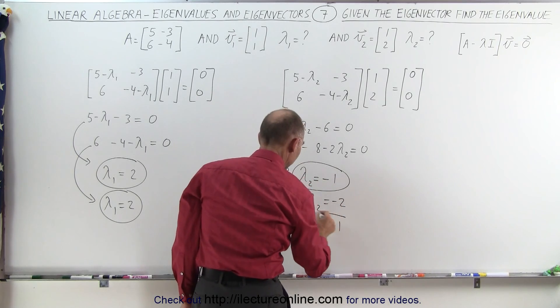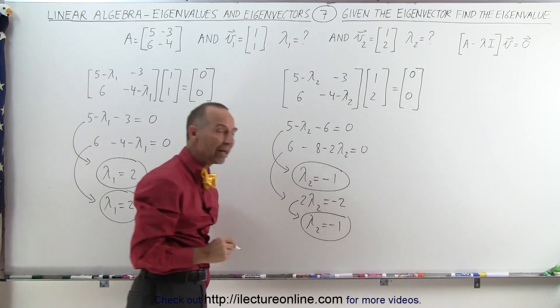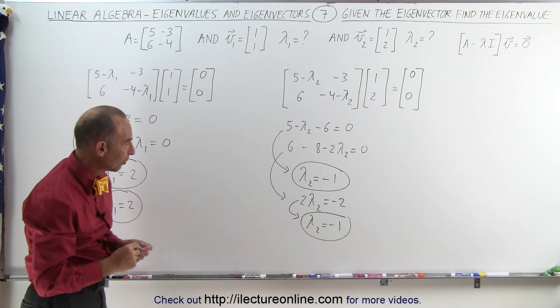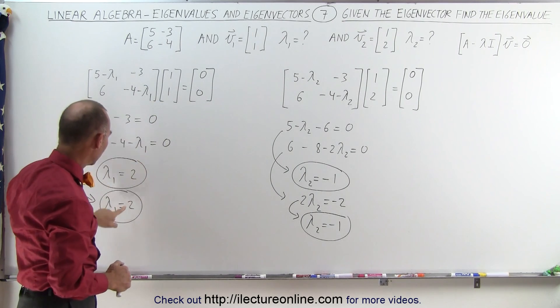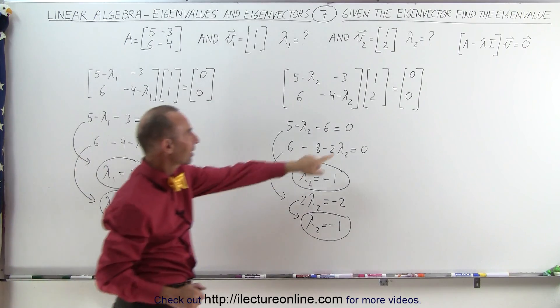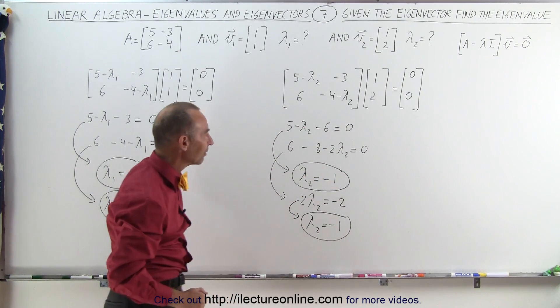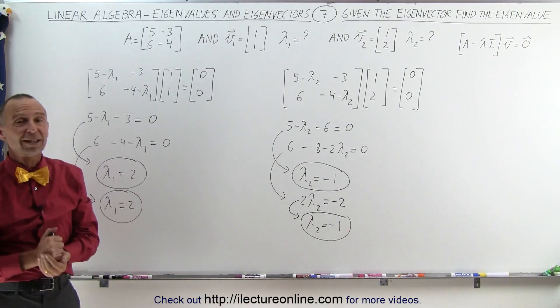Again, the two equations are consistent and we find a single value for λ₂. Therefore, when we get our first eigenvector, this will be the eigenvalue; we get our second eigenvector, this will be the eigenvalue. And that's how that's done.